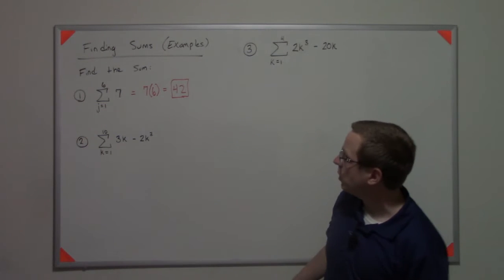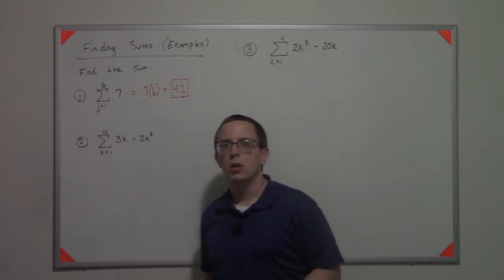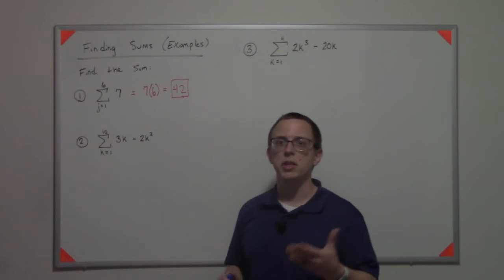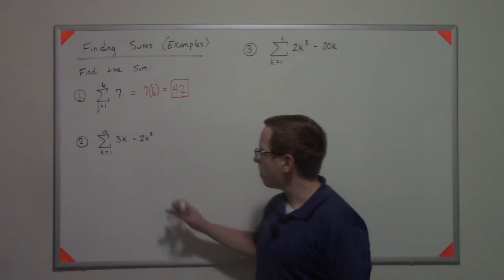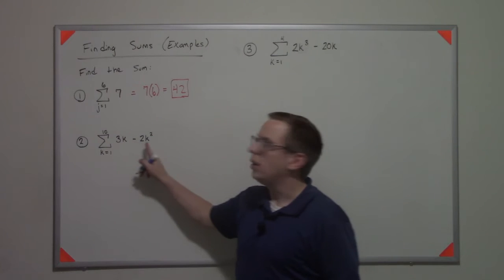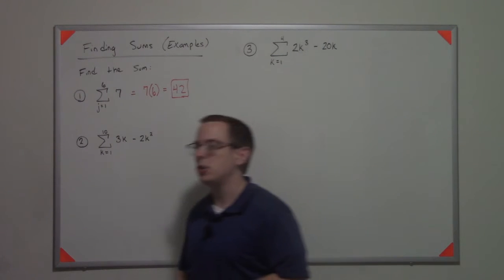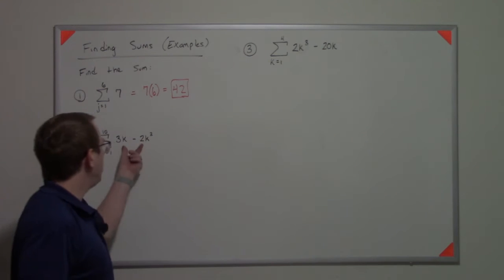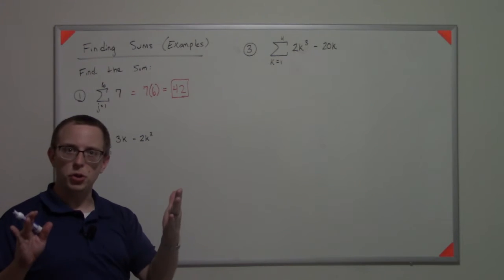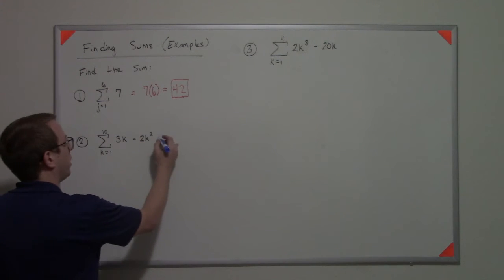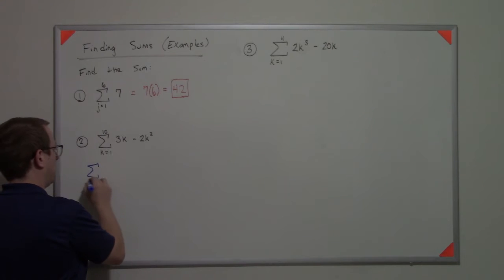Now for our next one, we're gonna have to use some of these formulas that involve the index. We have k equals 1 to 10 of 3k minus 2k squared. So what we can do is, since we have a difference, we can split those into two sigma sums.